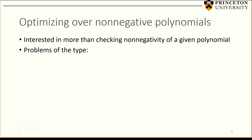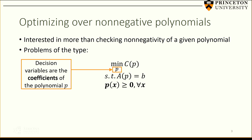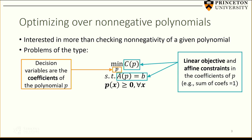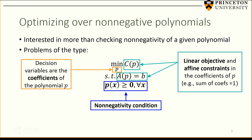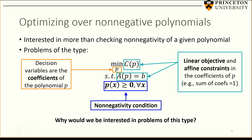I'm interested in something even more than just checking non-negativity of a given polynomial. What I'm actually interested in are problems I call optimizing over non-negative polynomials: problems where the decision variables are the coefficients of my polynomial, the objective is linear in those coefficients, the constraints are affine in the coefficients, and there is an extra non-negativity condition.